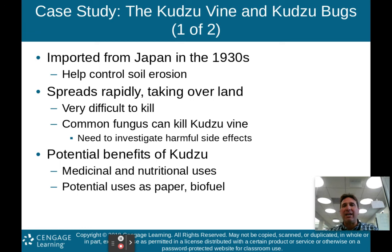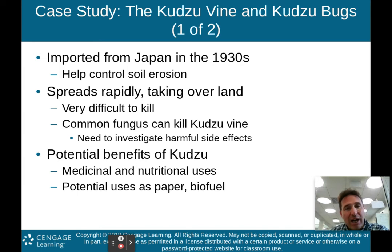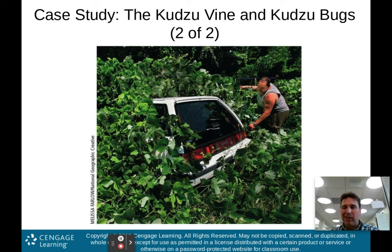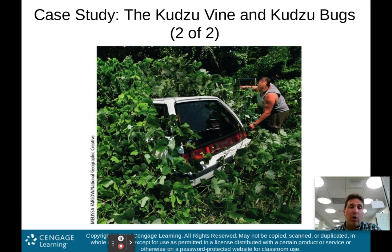The kudzu vine was imported from Japan in the 1930s to help control soil erosion. However, it spreads very rapidly, taking over the land, and is very difficult to kill. A common fungus can kill it, but we need to investigate the harmful side effects of that fungus. Some potential benefits include medicinal and nutritional uses, or use as paper or a biofuel. In this picture, you can see how the vine has basically overgrown a car — this is how aggressive this vine is — and you can see how it can take over land and push out or prevent native species from surviving and growing.